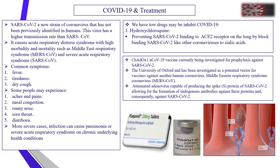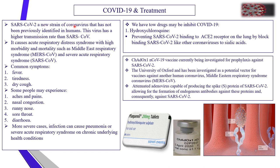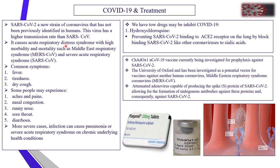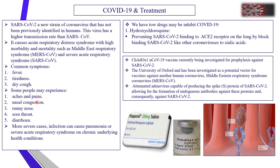Now I will talk about COVID-19 and its symptoms, as well as its treatment. COVID-19 is known as the SARS-CoV-2 virus. It is a new strain of coronavirus not previously identified in humans, and this virus has a higher transmission rate than SARS-CoV. It causes acute respiratory distress syndrome and high morbidity and mortality, similar to Middle East respiratory syndrome and severe acute respiratory syndrome. Common symptoms include fever, dryness, and dry cough. Some people may experience aches, pain, nasal congestion, runny nose, sore throat, and diarrhea.